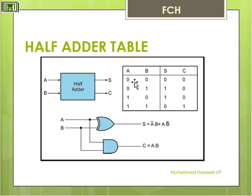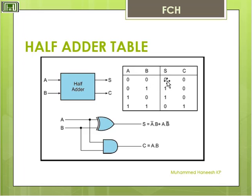Listen to this table. First, we know that binary is the combination of 0 and 1. In the first row we have 0 and 0. 0 and 0 is equal to 0. Sum is equal to 0. There is no Carry, so Carry is equal to 0.